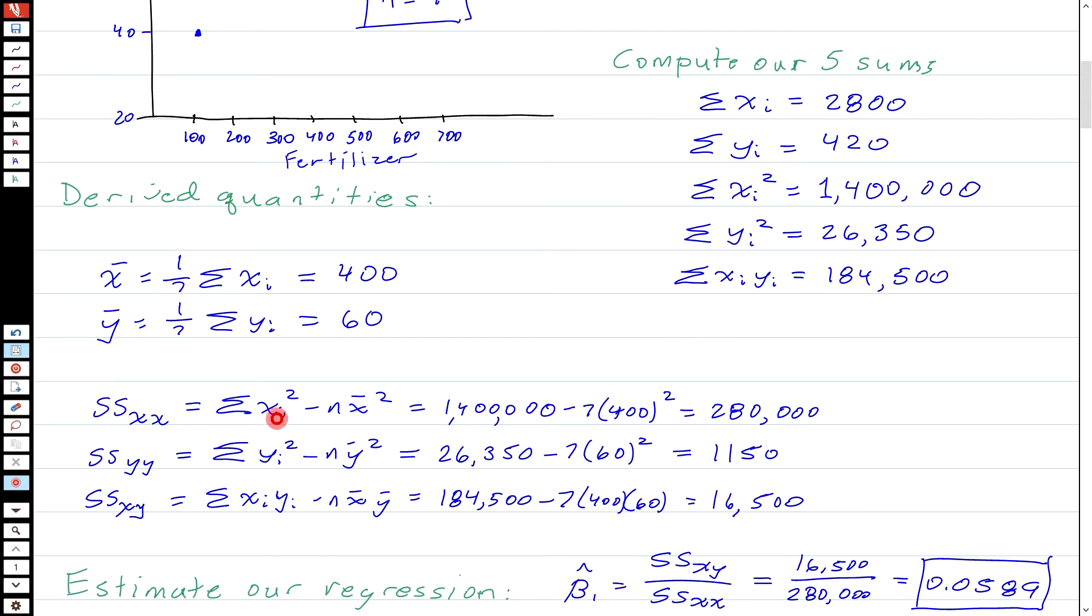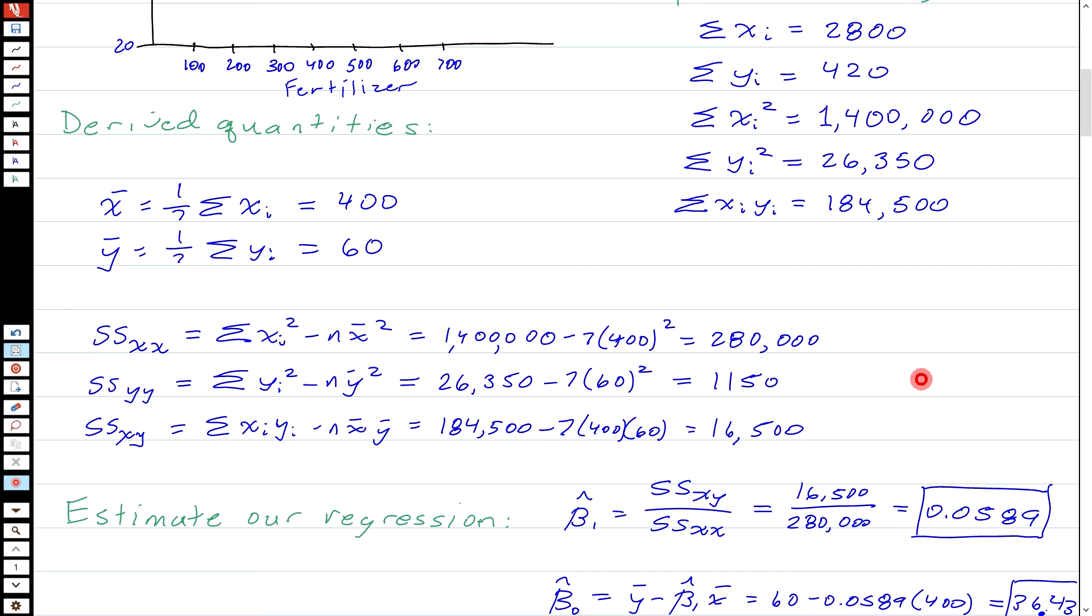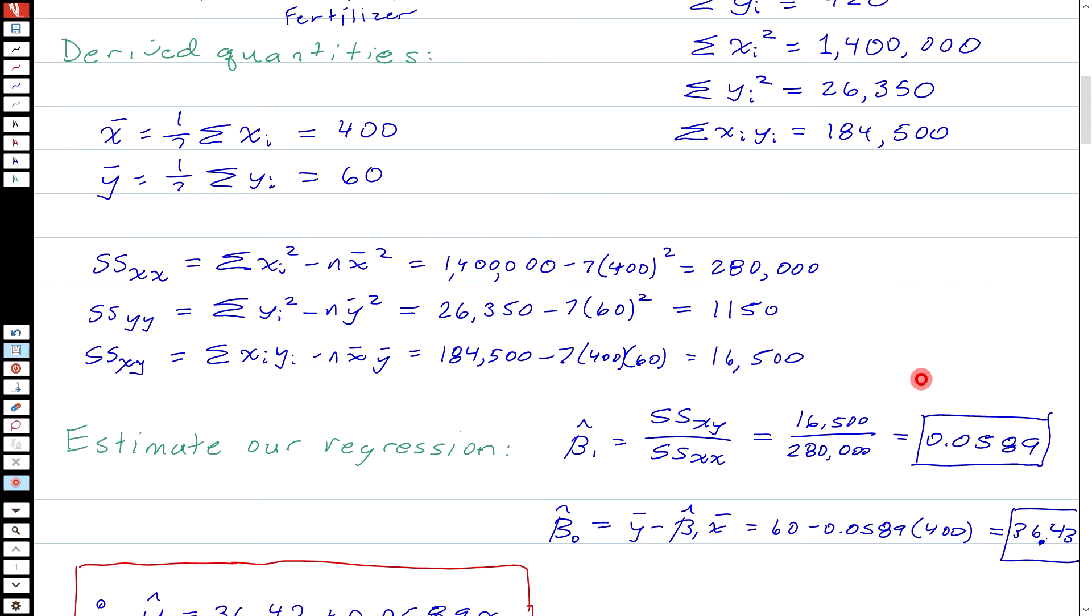SSXX is equal to the sum of the XI squareds, so 1,400,000, minus 7 times my X bar squared, which is 400 squared, and that gives me 280,000. SSYY is the sum of the YI squareds, that's 26,350, minus N times Y bar squared, which is 60 squared, and I get 1150. And SSXY is the sum of XI YIs, which is 184,500, minus N times X bar Y bar, and I get 16,500.